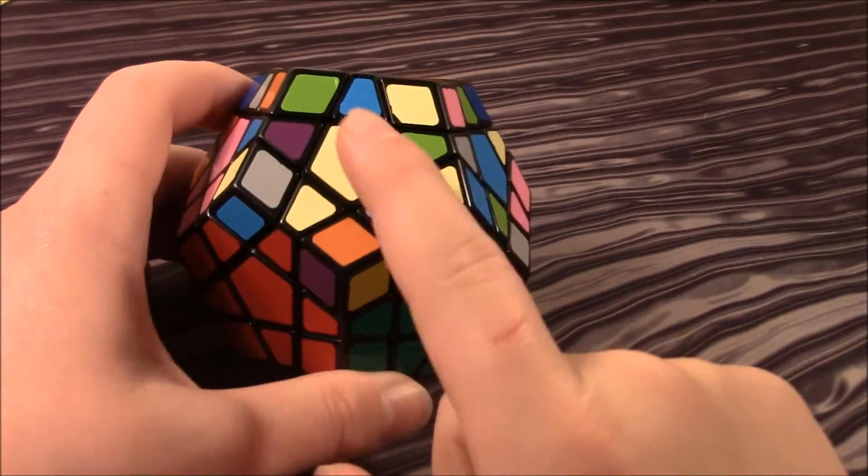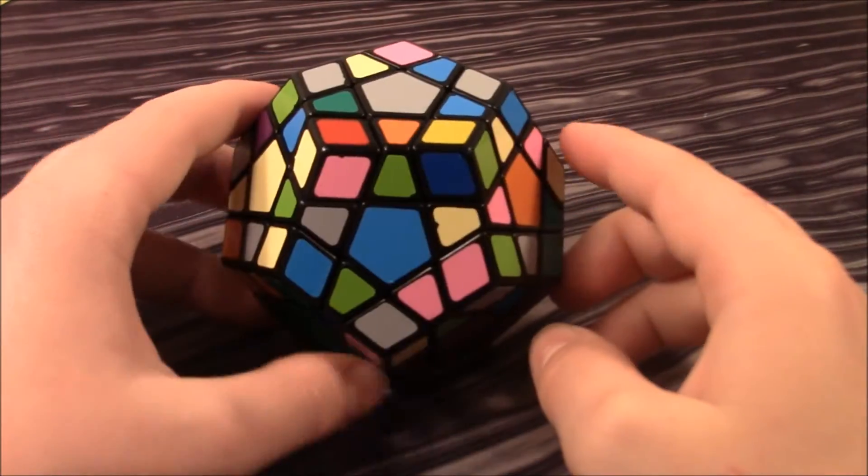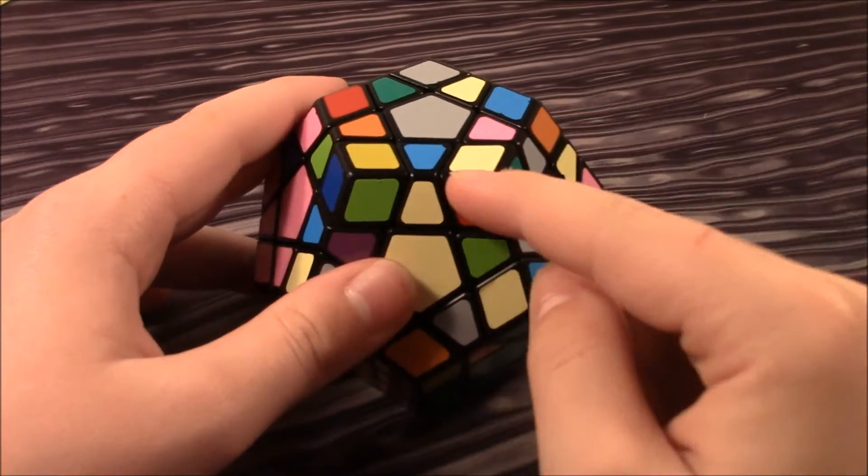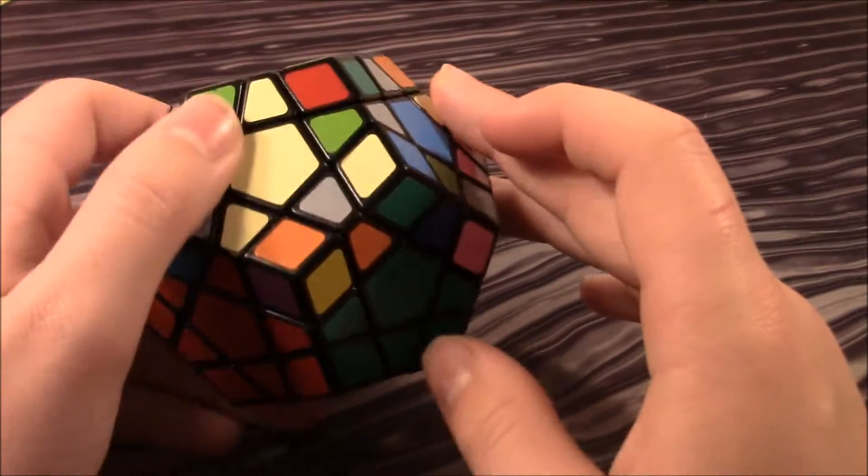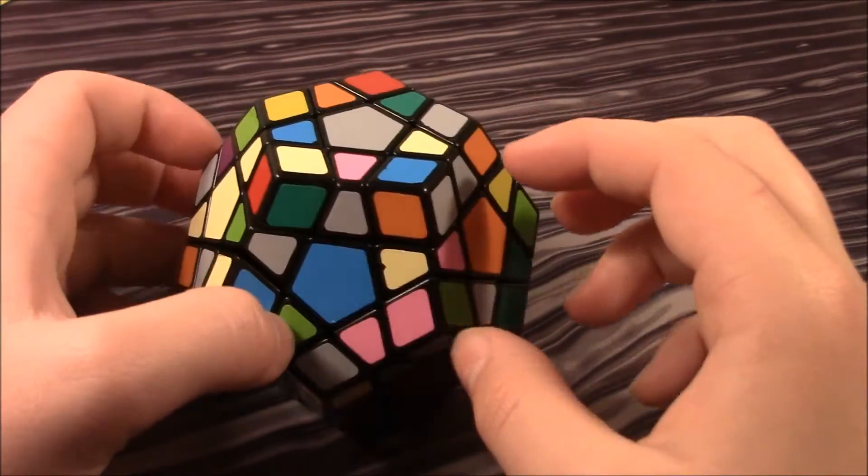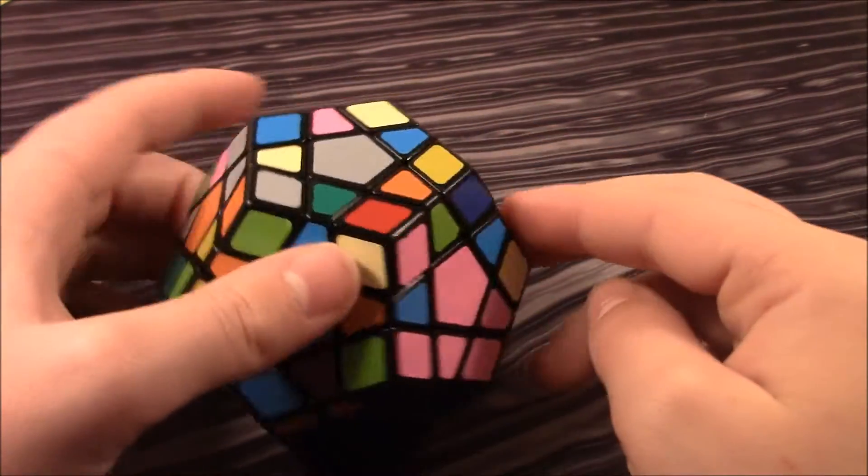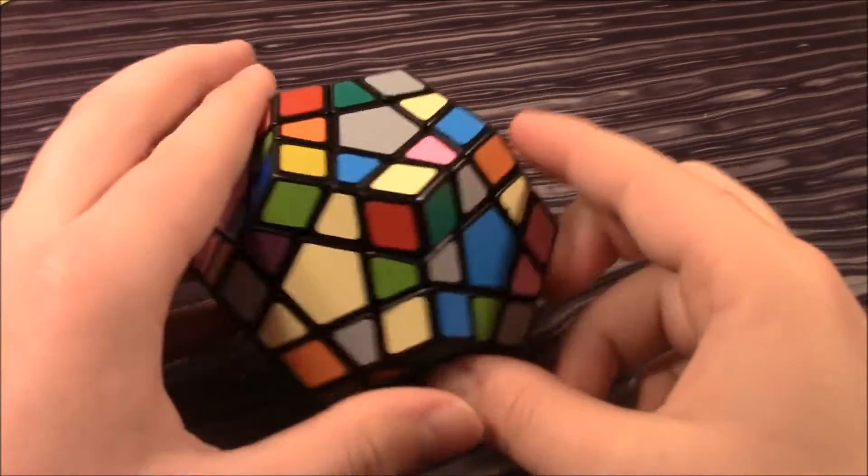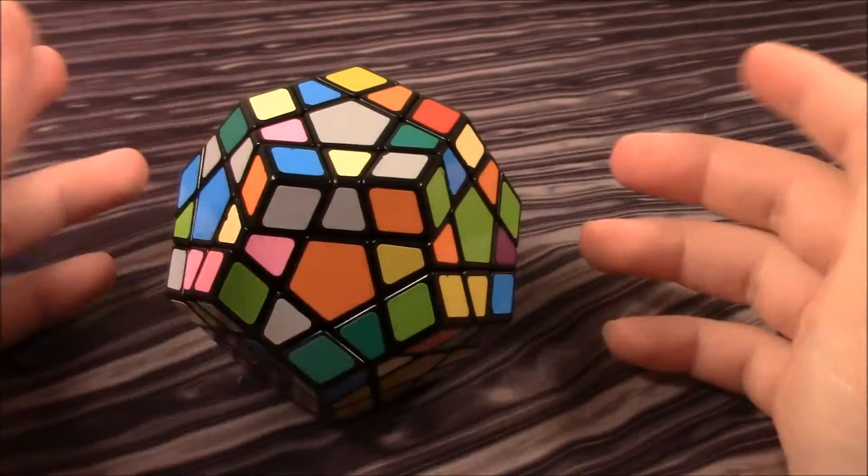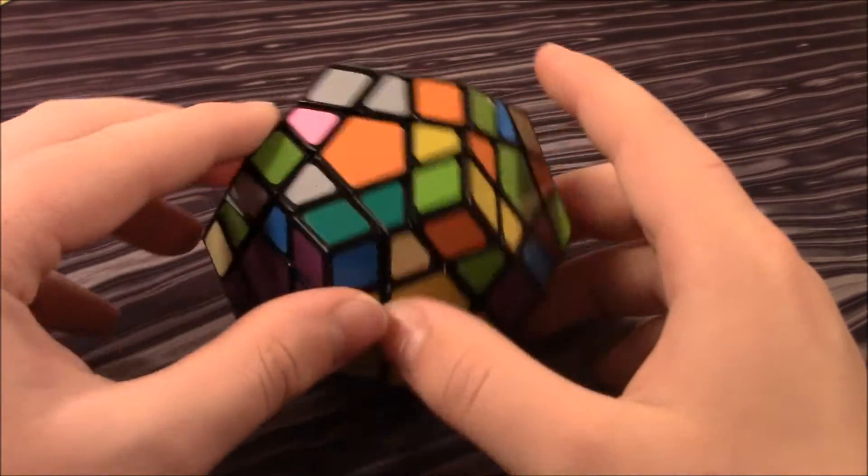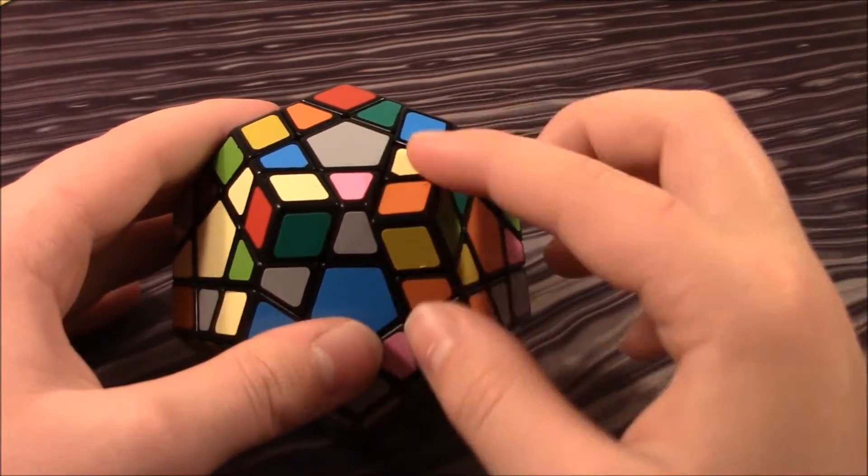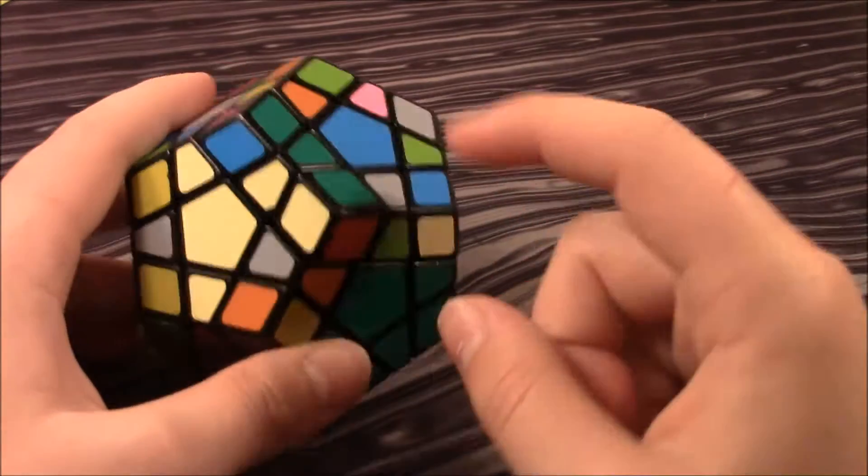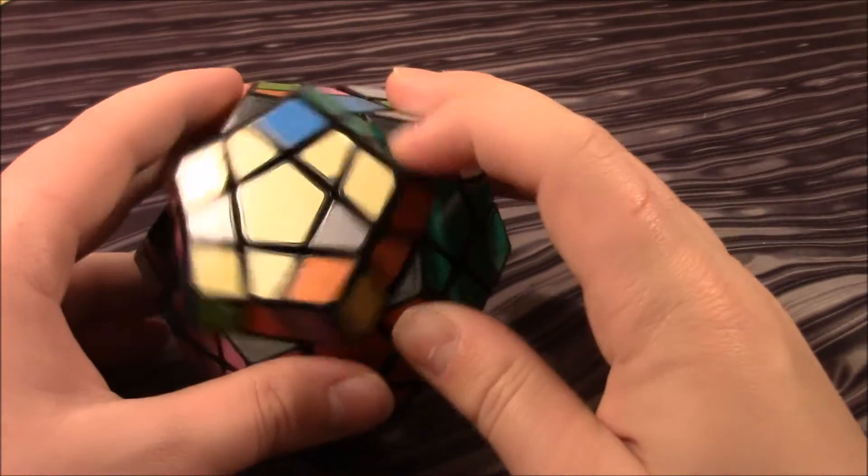Now I need to find the green, red, and bright yellow edge. Let's see. Here it is right here. So I can bring this to the top layer, bring it over here. And now find the green and bright yellow edge. Okay, recognition on this thing, I'm not very good at it. So here we go. It's right here. And I can again just hide that, place that in there.